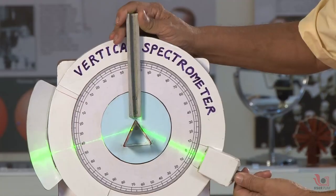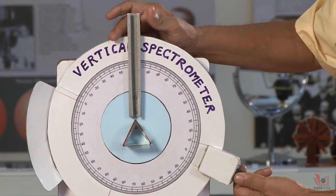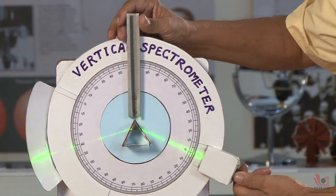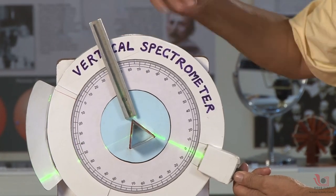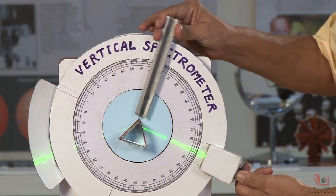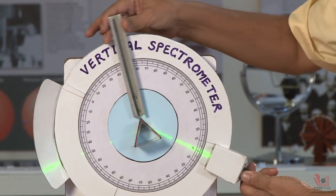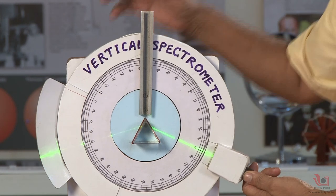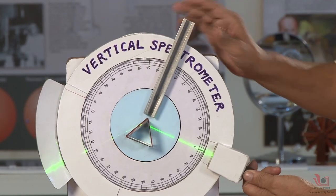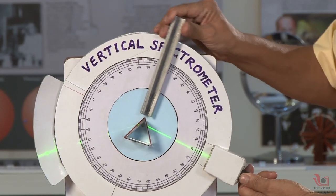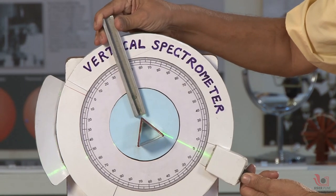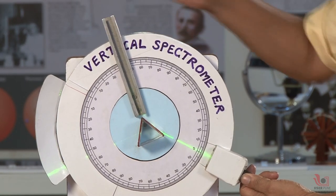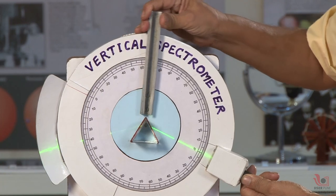We can observe an interesting phenomenon: if I turn the prism either anti-clockwise or clockwise, this ray comes up and then goes down. You can see here. Now I'm turning anti-clockwise—it comes up and goes down. Now I turn clockwise—it again comes up and goes down.